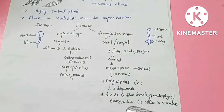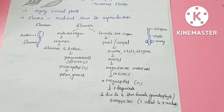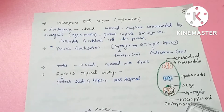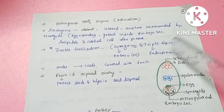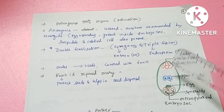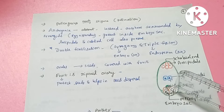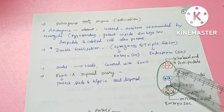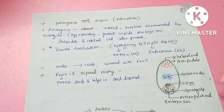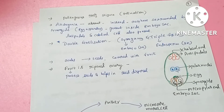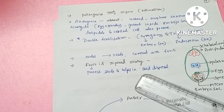The female gametophyte develops into the embryo sac. The embryo sac is a 7-celled, 8-nucleated structure — with 3 + 2 + 3 nuclei arrangement totaling 8 nuclei.